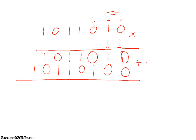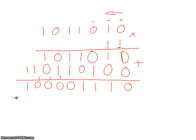We draw a line and add the two rows together. Zero plus zero is zero, one plus zero is one, zero plus one is one, one plus zero is one, one plus one is zero carry one, zero plus one is one plus one carry gives zero carry one, one plus zero is one plus one gives zero carry one, one plus one is zero carry one, and the final one drops down.